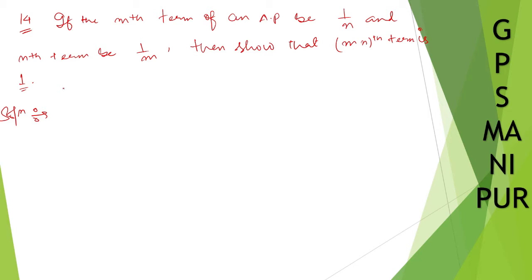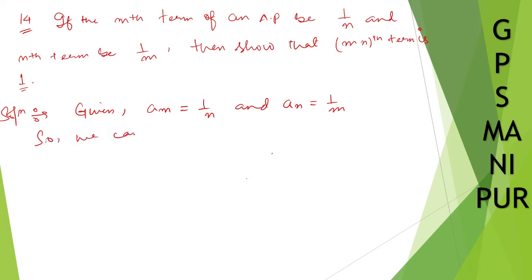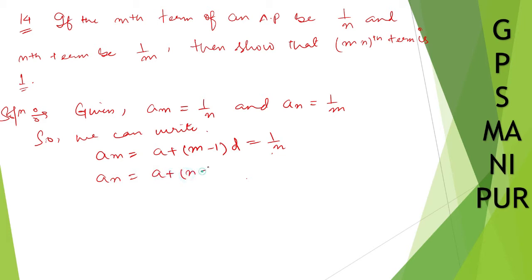So, if the mth term of an AP is 1/n, given: we have am equal to 1/n, and an equal to 1/m. We can write am as a plus (m minus 1)d equal to 1/n, and an as a plus (n minus 1)d equal to 1/m. These are equation number 1 and equation number 2.